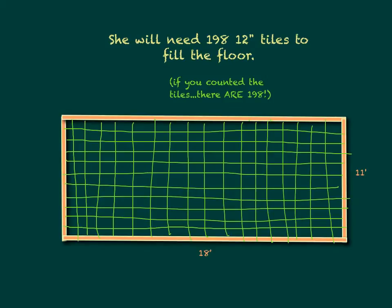Here is what 198 12-inch tiles would look like. You could count the tiles — there are 198 altogether.